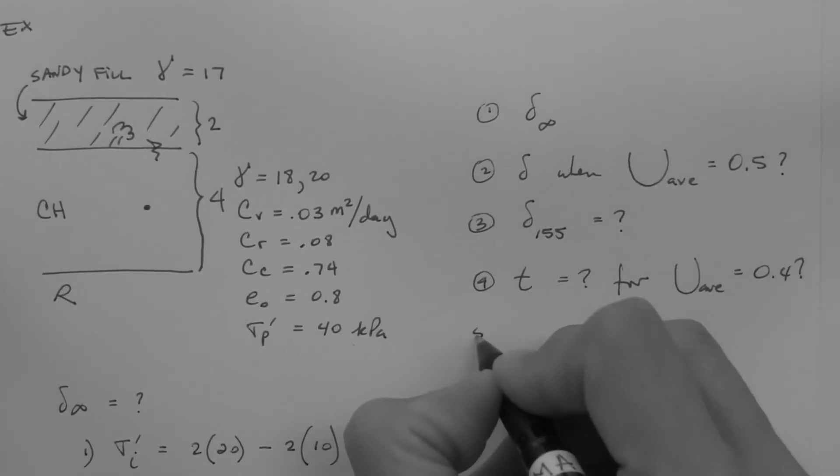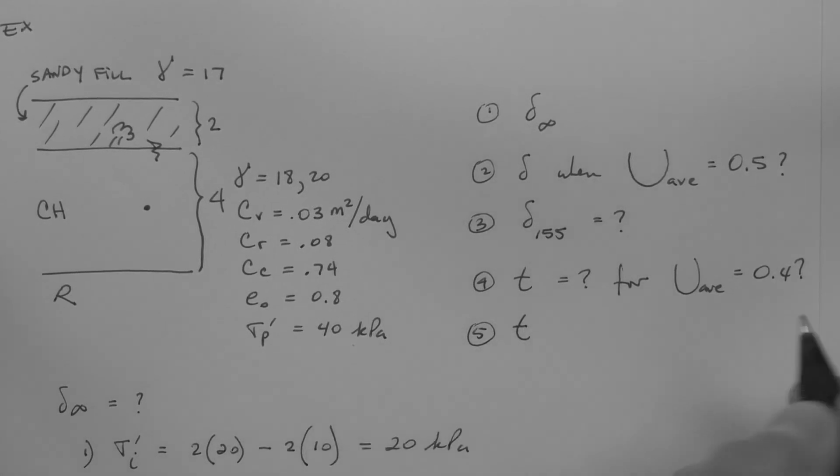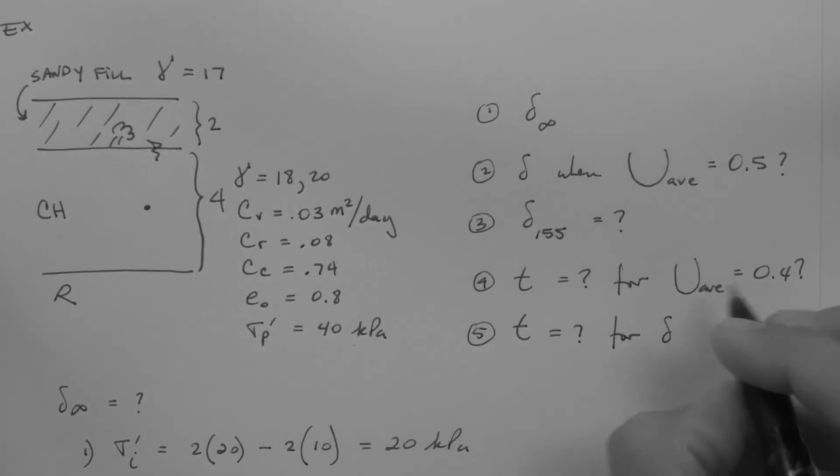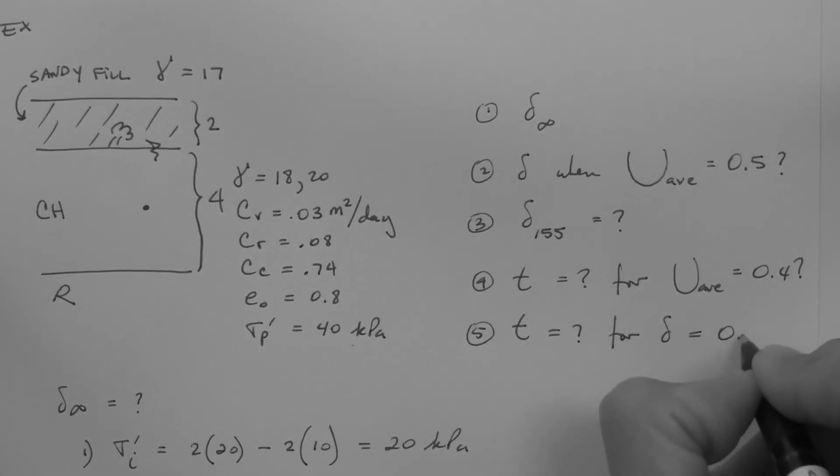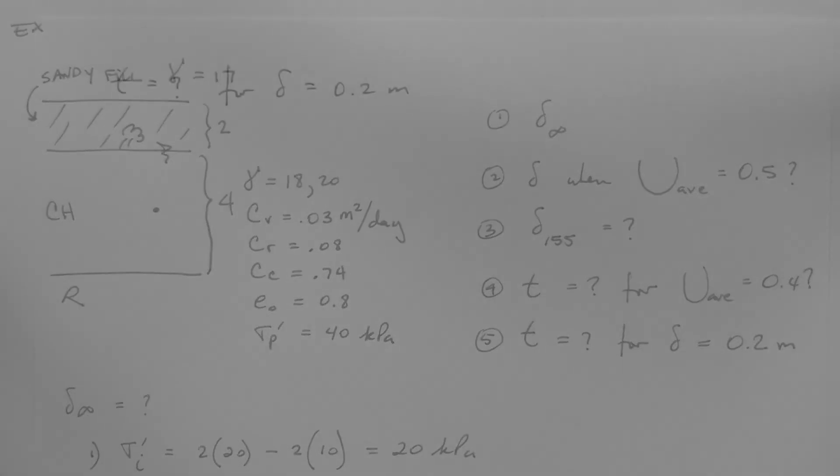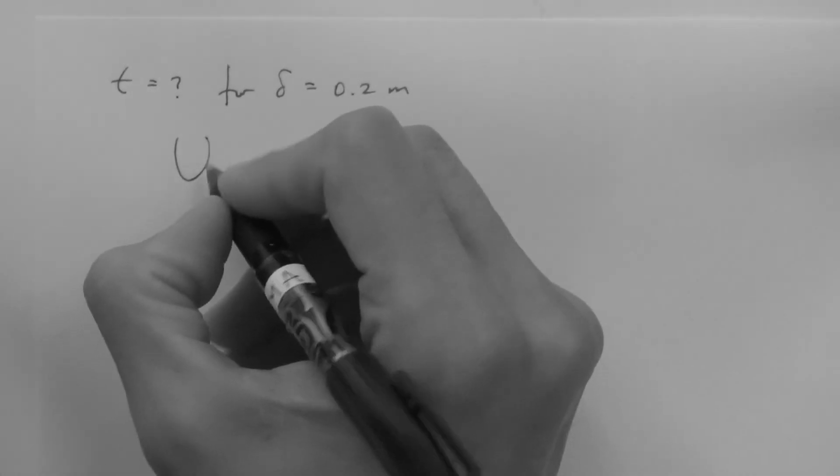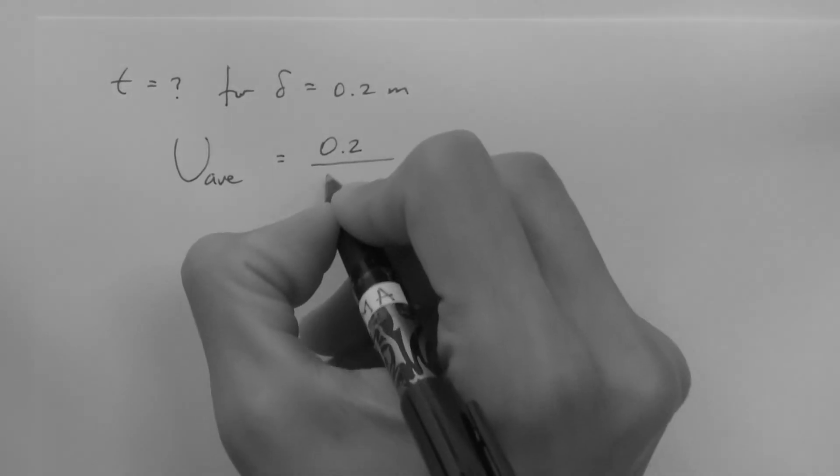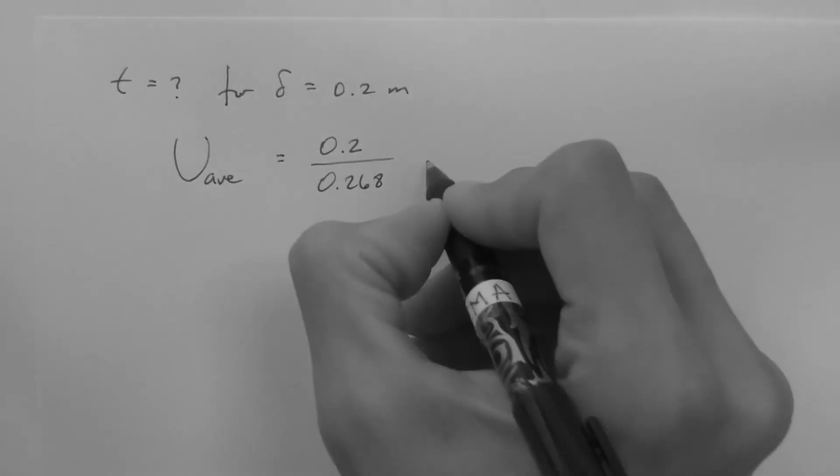Another question, number 5. How long does it take for the settlement to reach 0.2 meters? If we know the settlement and the ultimate settlement, then we know the average degree of consolidation. 0.2 divided by 0.268 equals 0.746.